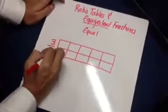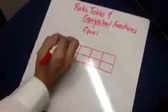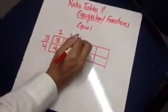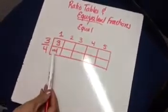So I'm going to start with an easy fraction, 3/4, and I'm going to put it as my first fraction. And I'm going to make five more fractions that are equal.